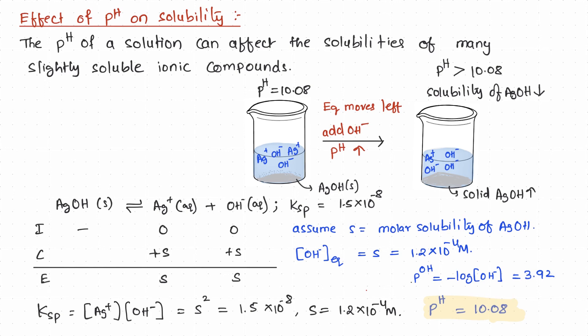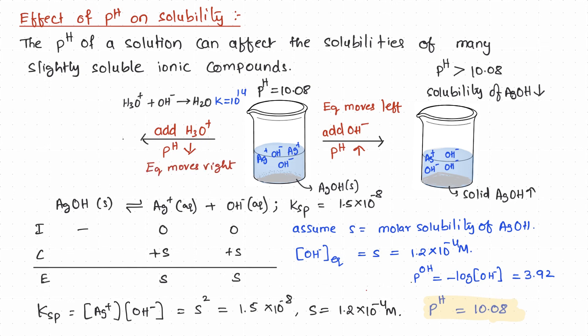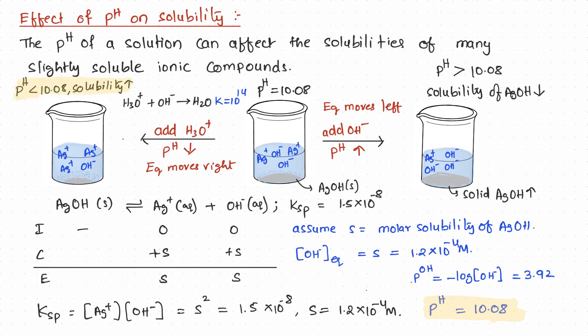On the other hand, if we add a strong acid such as hydrochloric acid to it, this decreases the pH of the solution. The added hydronium ions react with the hydroxide ions present in the solution to form water. The equilibrium constant for this reaction is 10 to the positive 14 at room temperature — that is, the equilibrium lies towards the products. So the added hydronium ions act as an absorbent of hydroxide ions, decreasing their concentration and stressing the existing equilibrium. As a response, the equilibrium moves to the right, decreasing the amount of solid silver hydroxide and increasing its solubility.